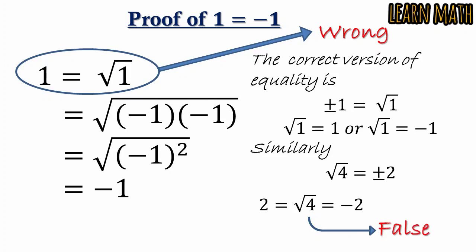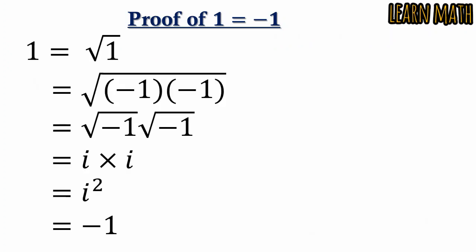But there is also another problem in the second proof. Look at the second proof. In this proof, the supposition is also wrong, but there is another mistake. This one: √((-1) × (-1)) cannot be written as √(-1) × √(-1). This step is wrong.